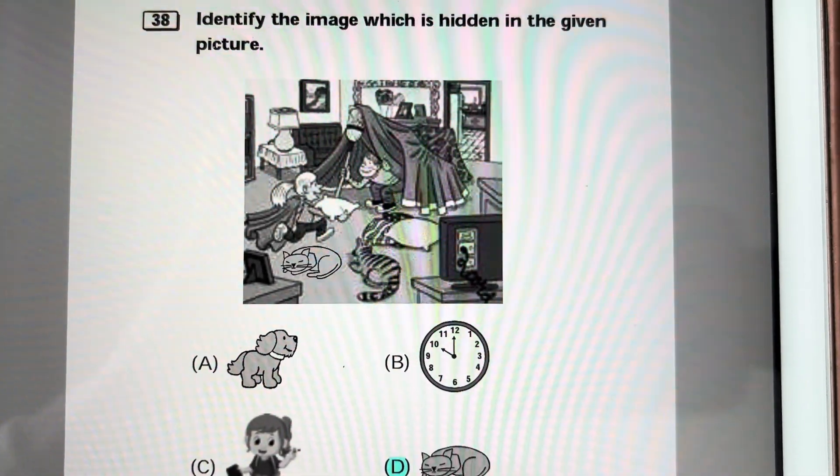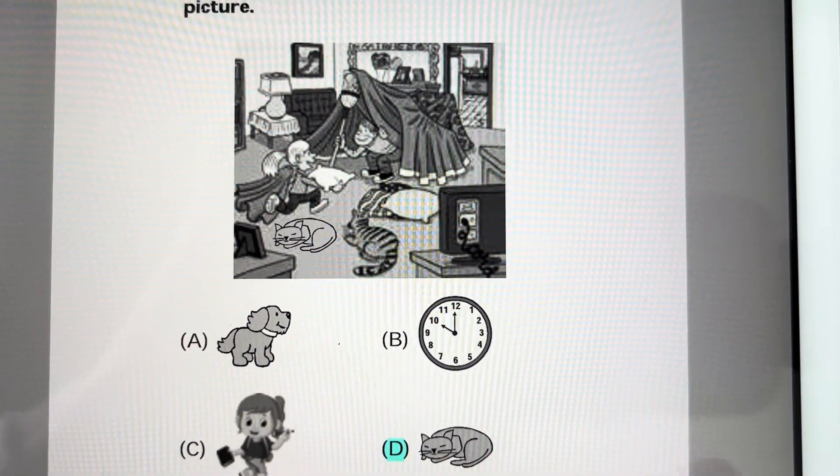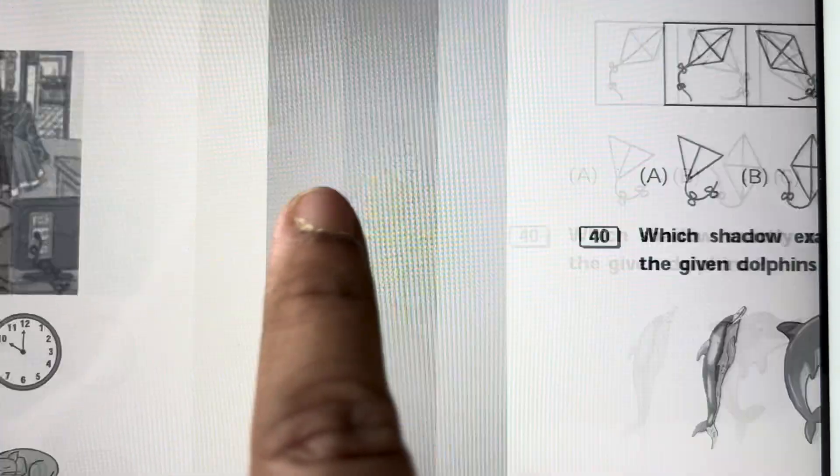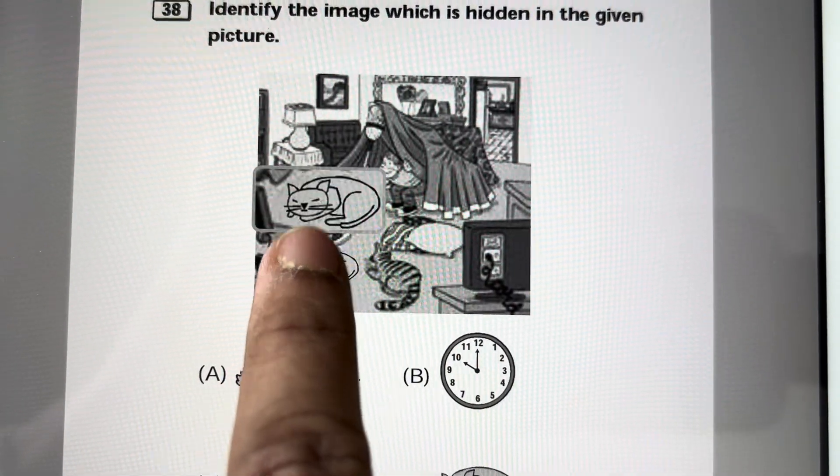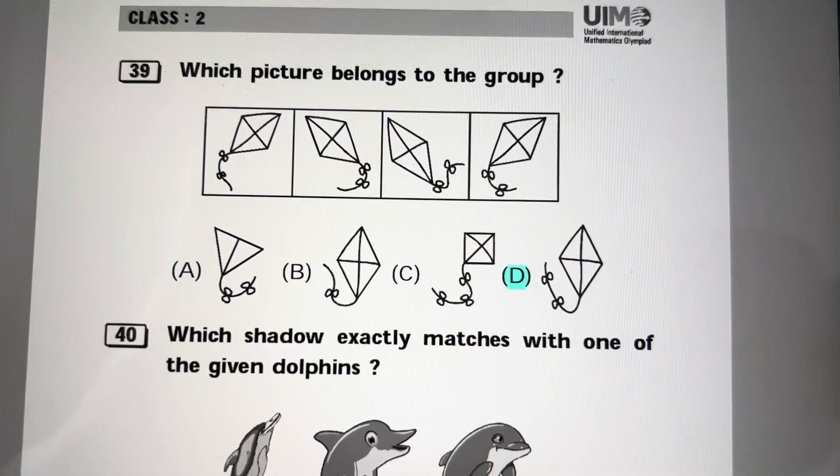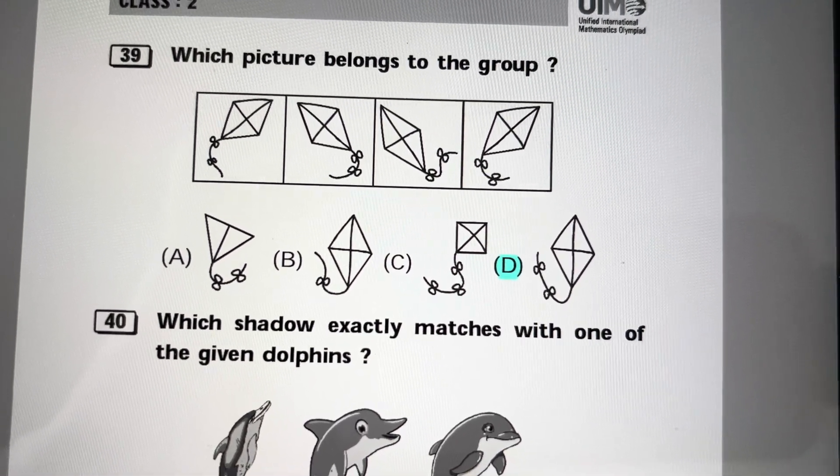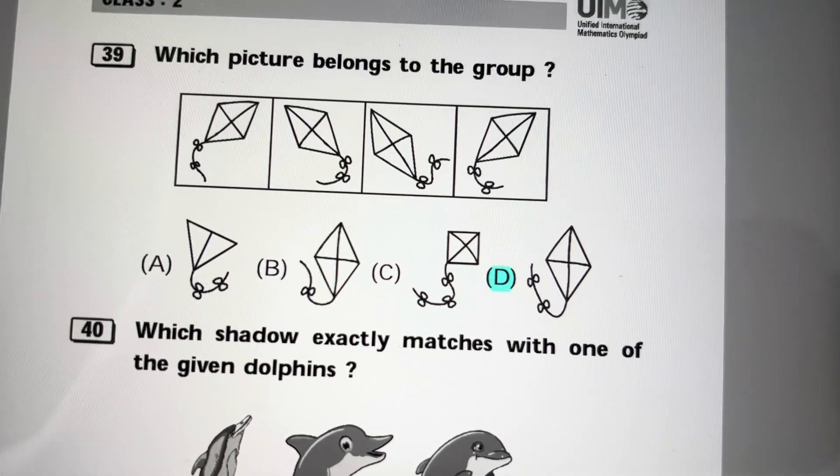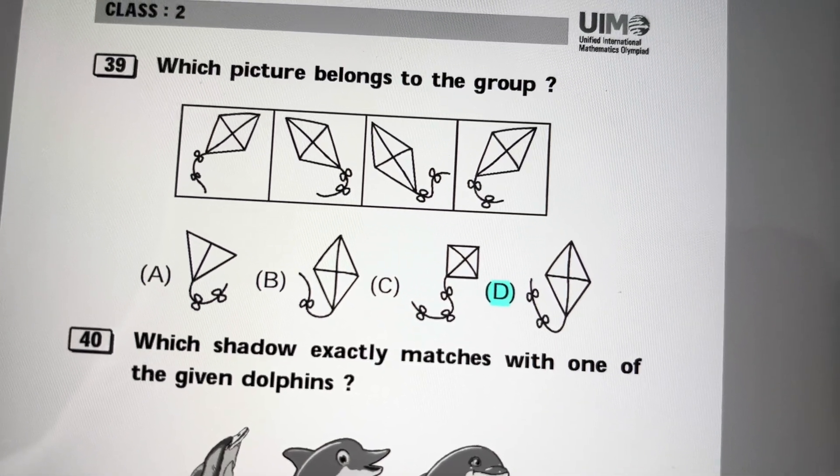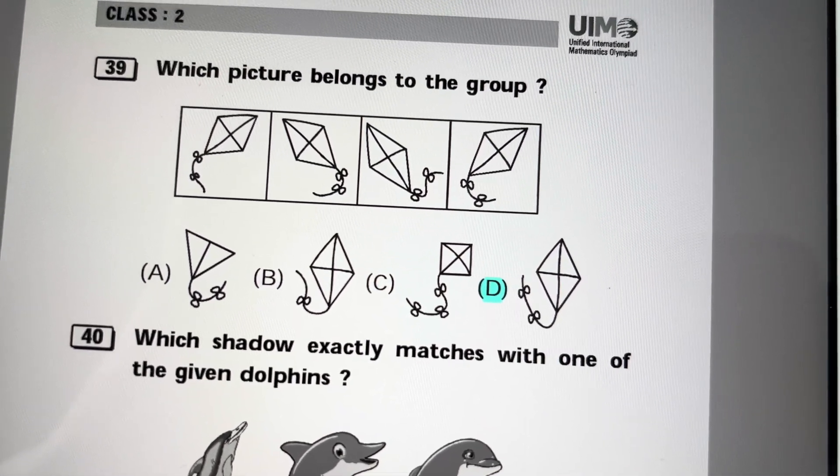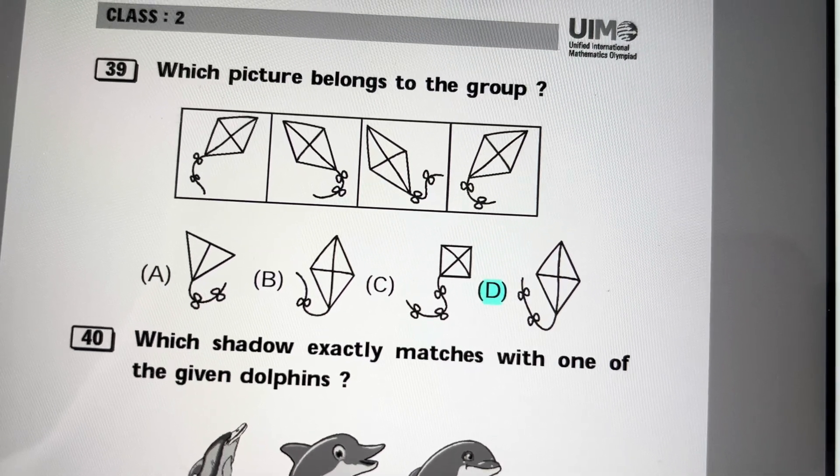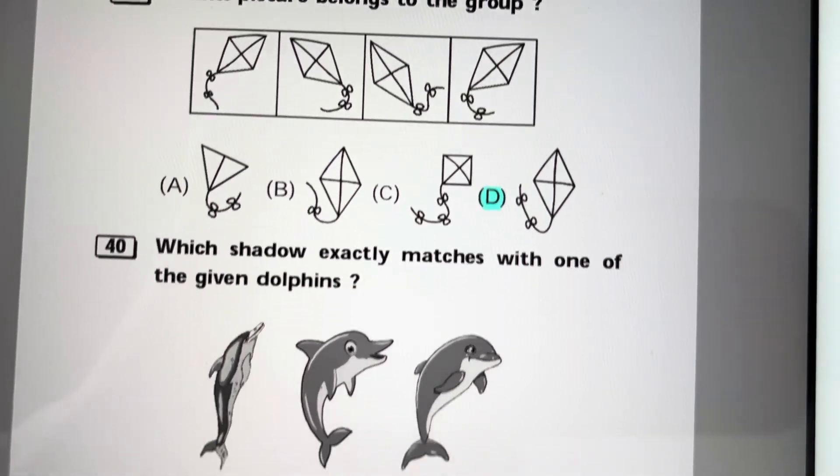Identify the image which is hidden in the given picture. The cat is hidden here, this is the cat. Which picture belongs to the group? In each kite there are two flowers at the tail, so the identical is D. This kite also has two pictures at its tail.